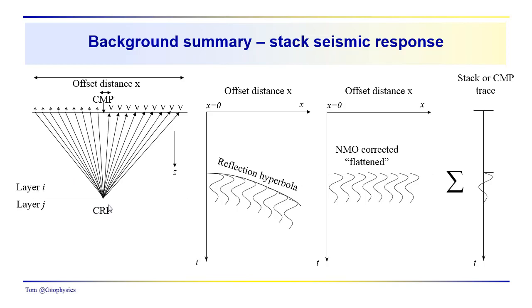In order to convert this into a common reflection point data set, we have increasing offset here — source-receiver offset. In this display, we're looking at offset distance from the source to the receiver. So that would be these distances here, source to the receiver at the longer offsets, near offset source and receiver. We see a nice simple reflection from this layer, all of which we presume are coming from the same reflection point between layers I and J. This reflection event in the common midpoint gather has a hyperbolic shape, so the travel times will increase with offset distance x.